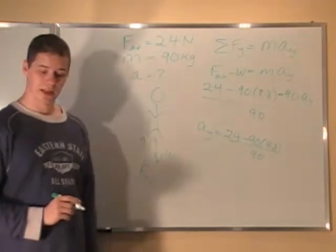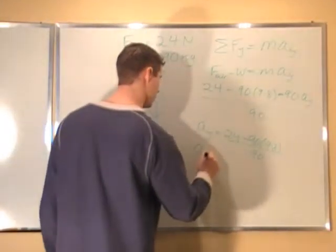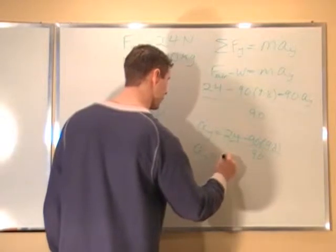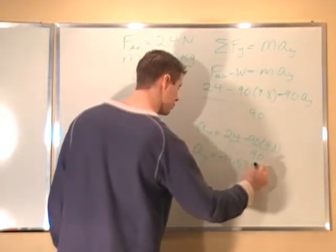And we plug that into our calculator, giving us an answer of acceleration y of negative 9.53 meters per second squared.